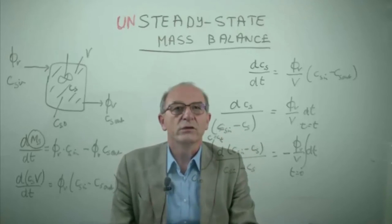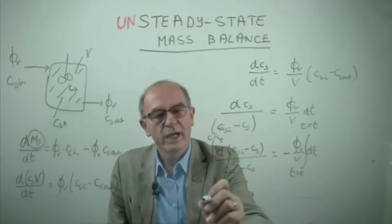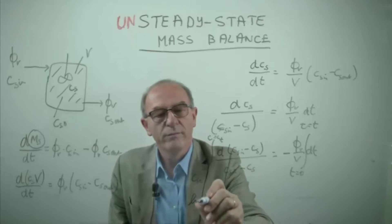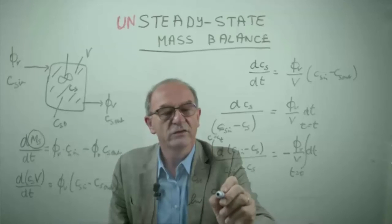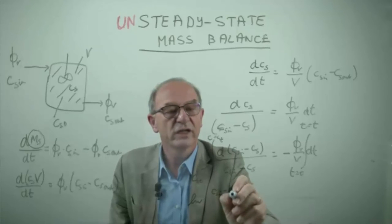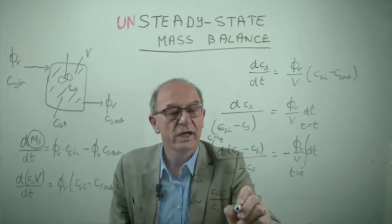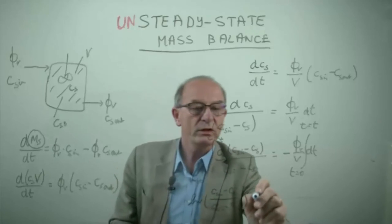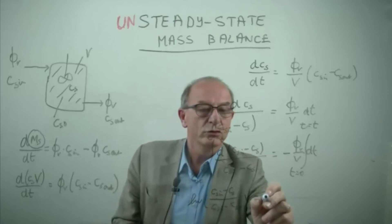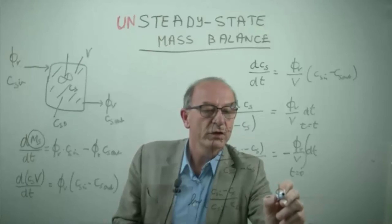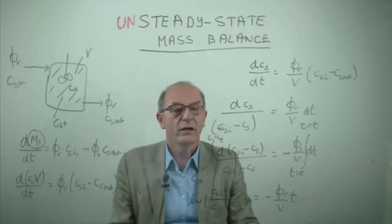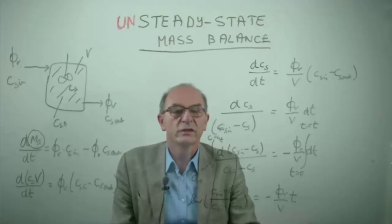Now we have to integrate this equation. And what we then get is the logarithm of C_s_in minus C_s at a certain time divided by C_s_in minus C_s_0 is equal to minus the volume flow rate divided by the volume multiplied by the time.